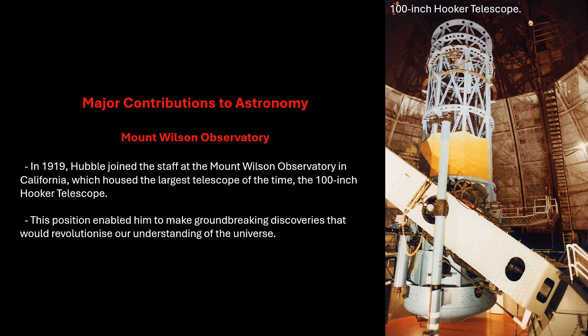In 1919, Hubble joined the staff at the Mount Wilson Observatory in California, which housed the largest telescope of the time, the 100-inch Hooker Telescope. This position enabled him to make groundbreaking discoveries that would revolutionise our understanding of the universe.